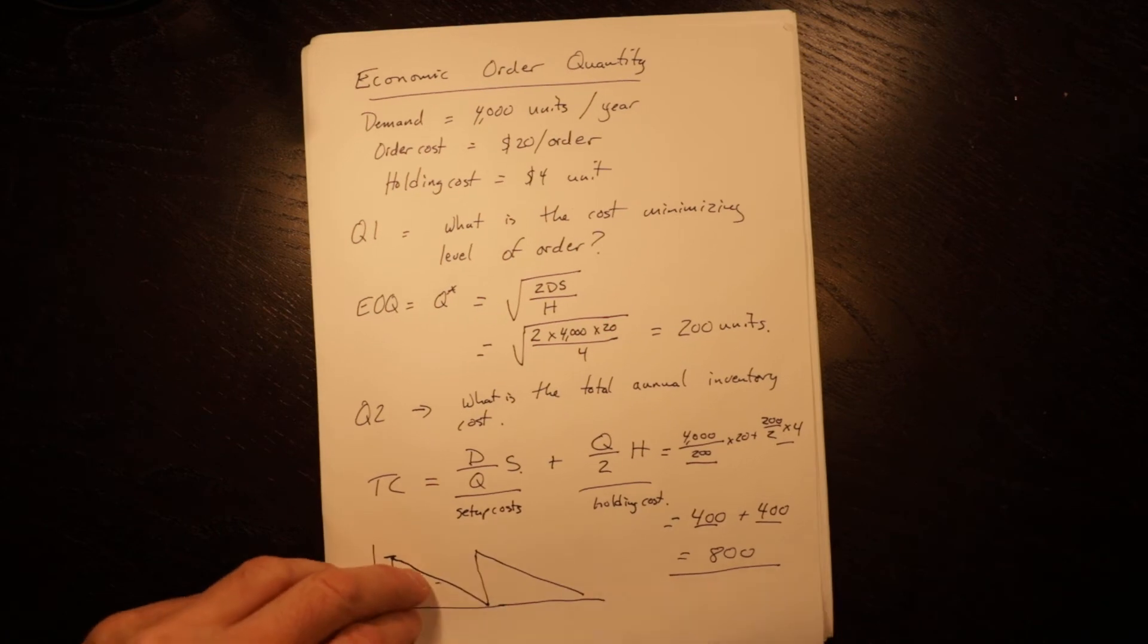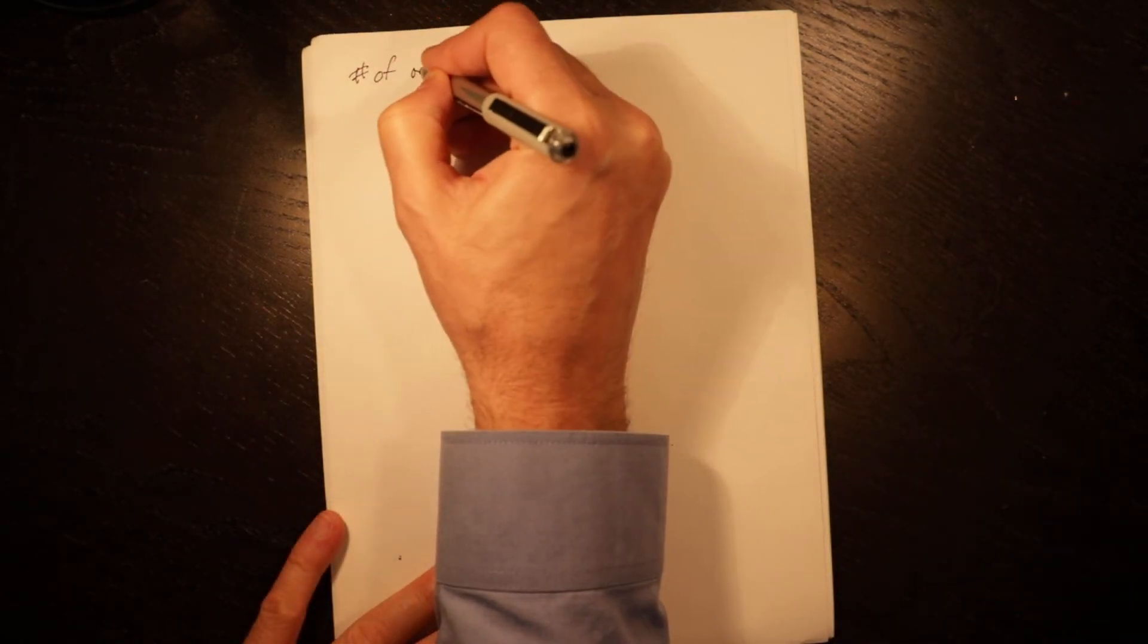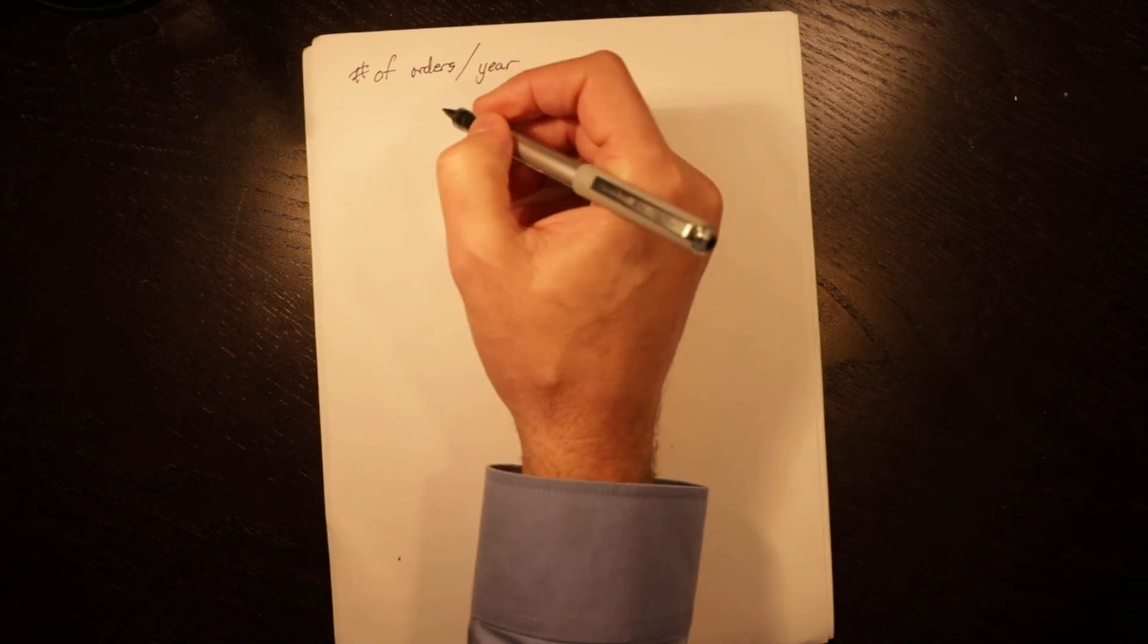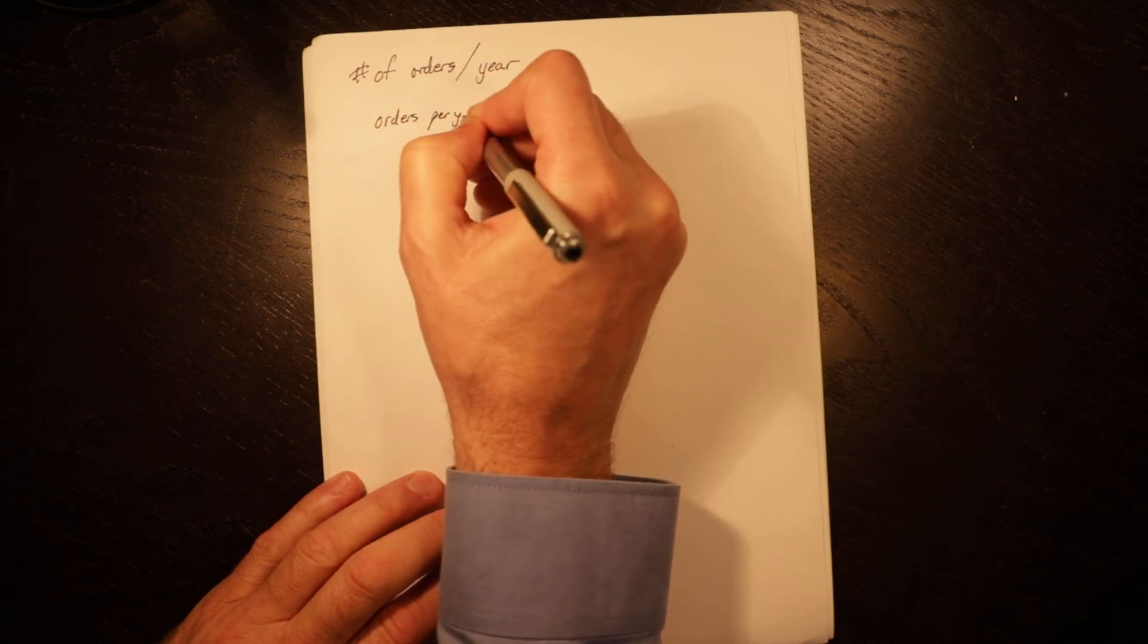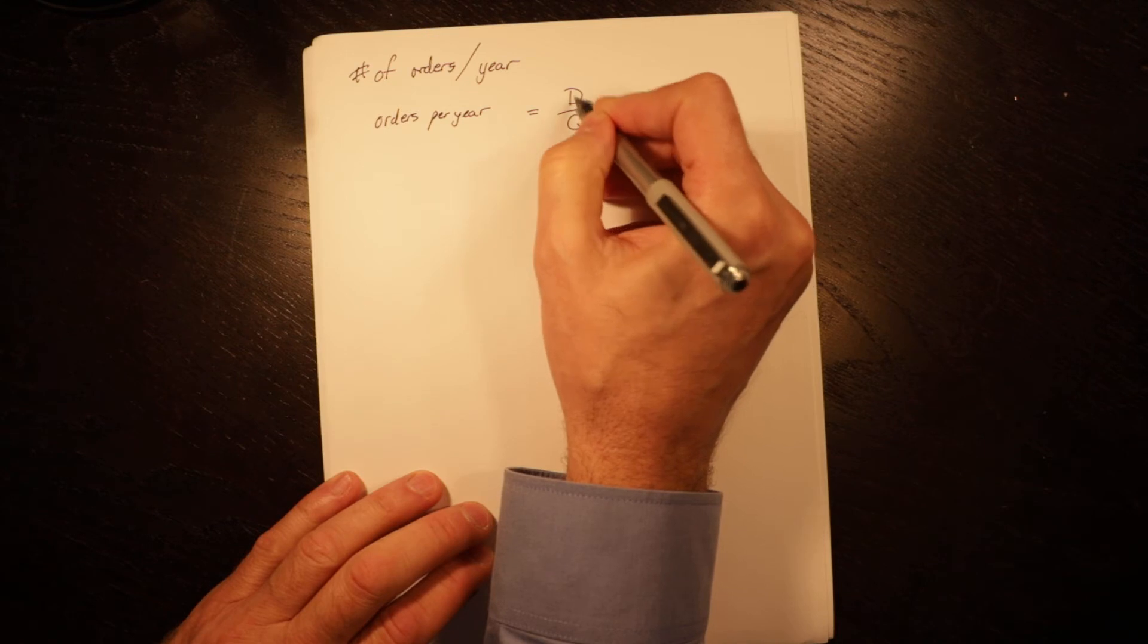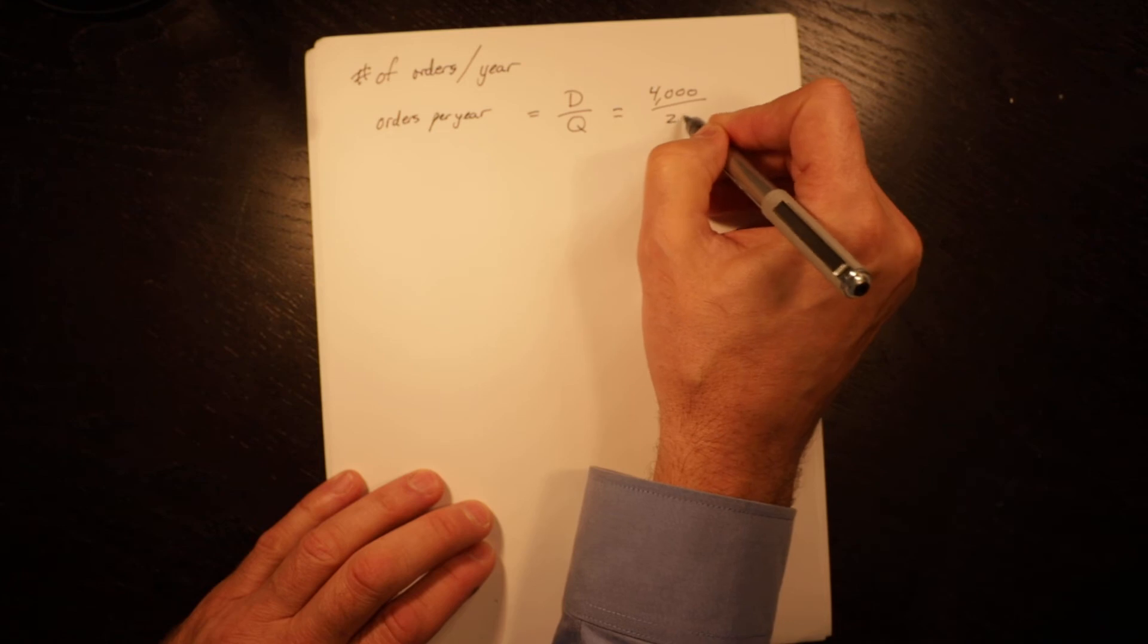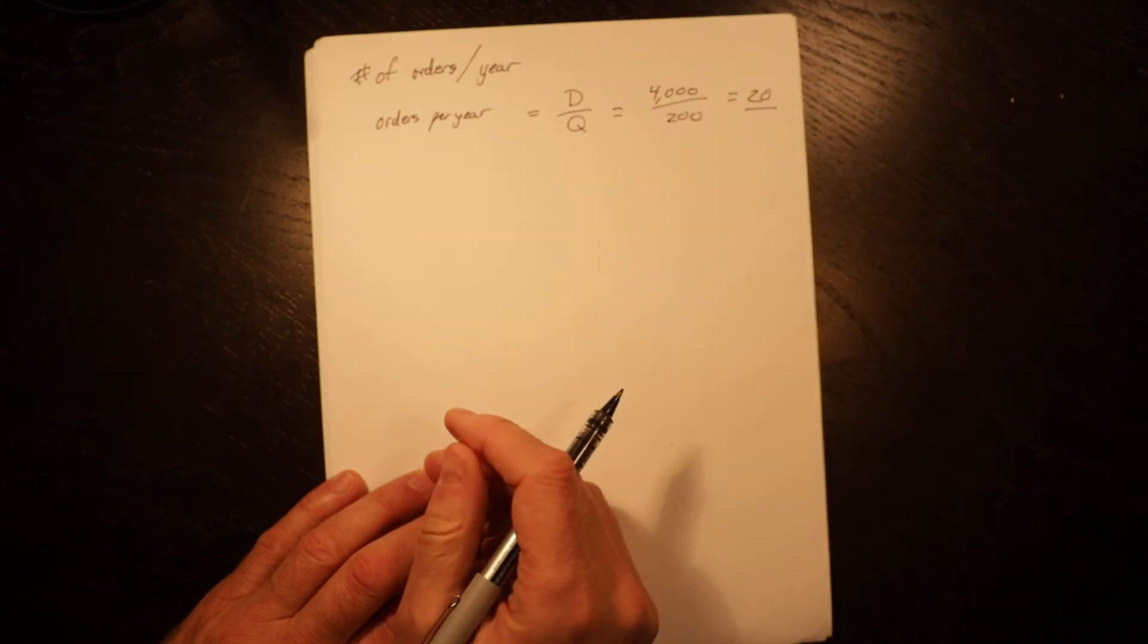Another question is number of orders per year. Orders per year are equal to D over Q, total demand by quantity ordered in each order, which is 4,000 divided by 200 equals 20. So we're going to place 20 orders per year.